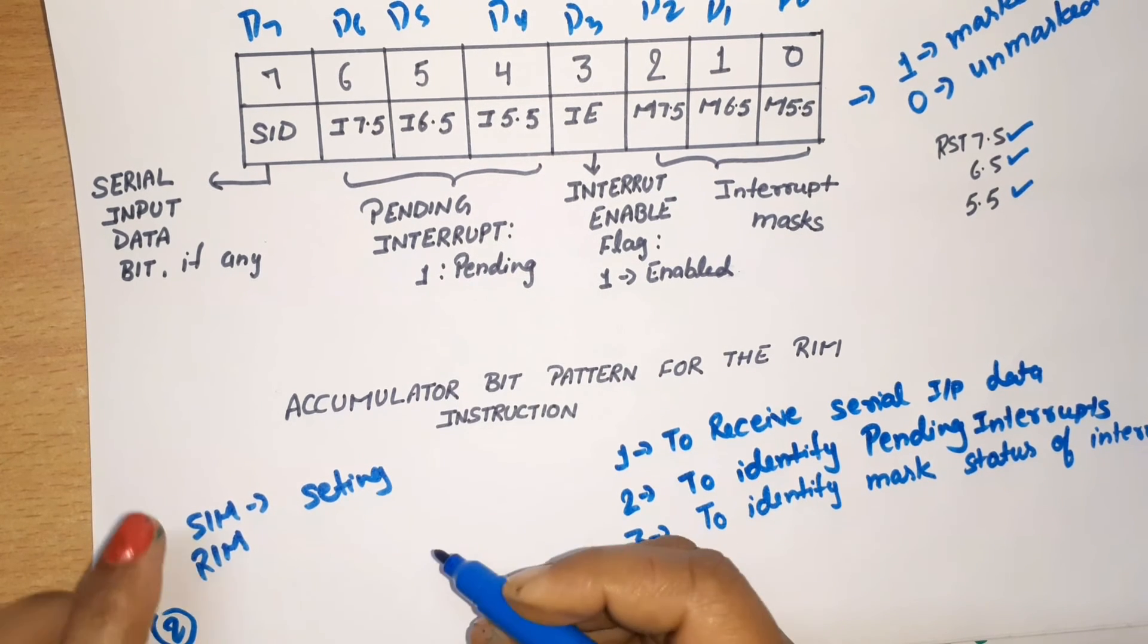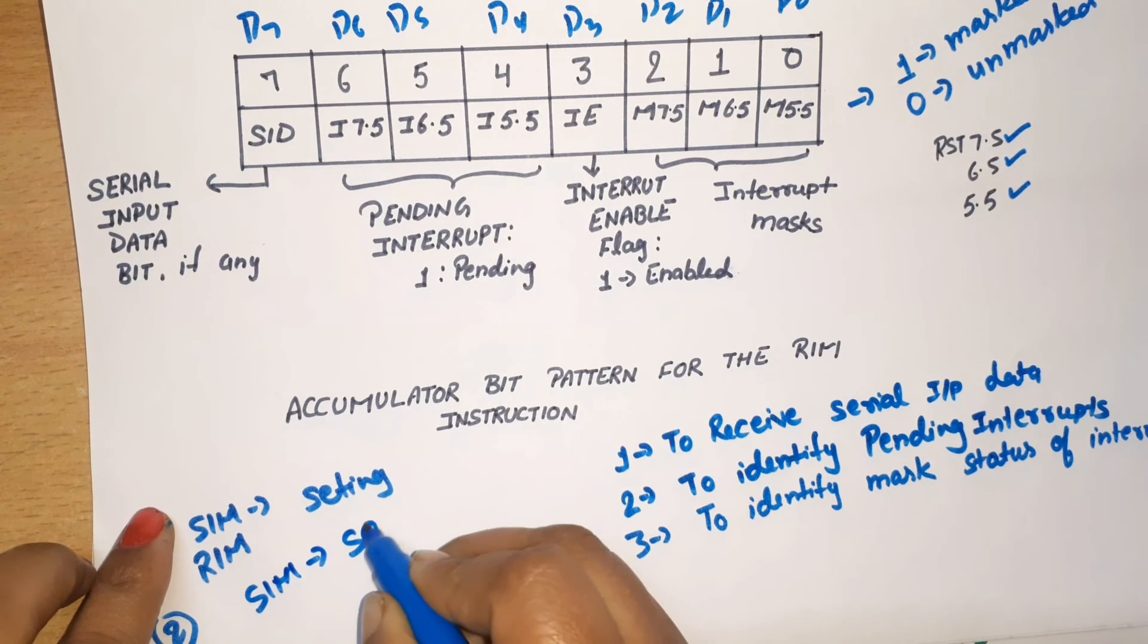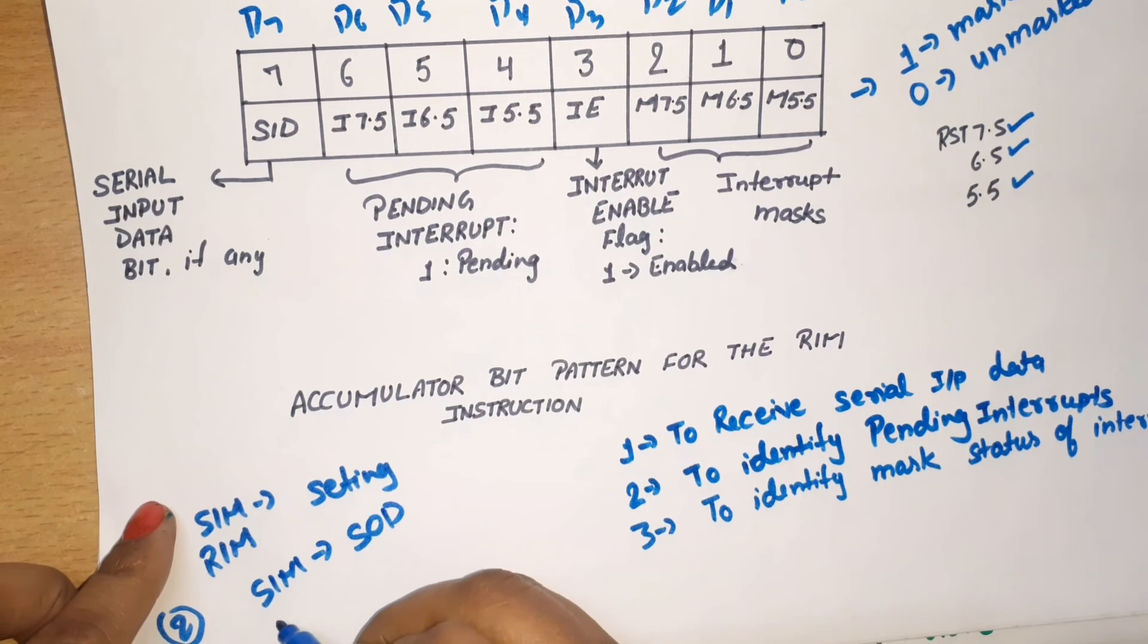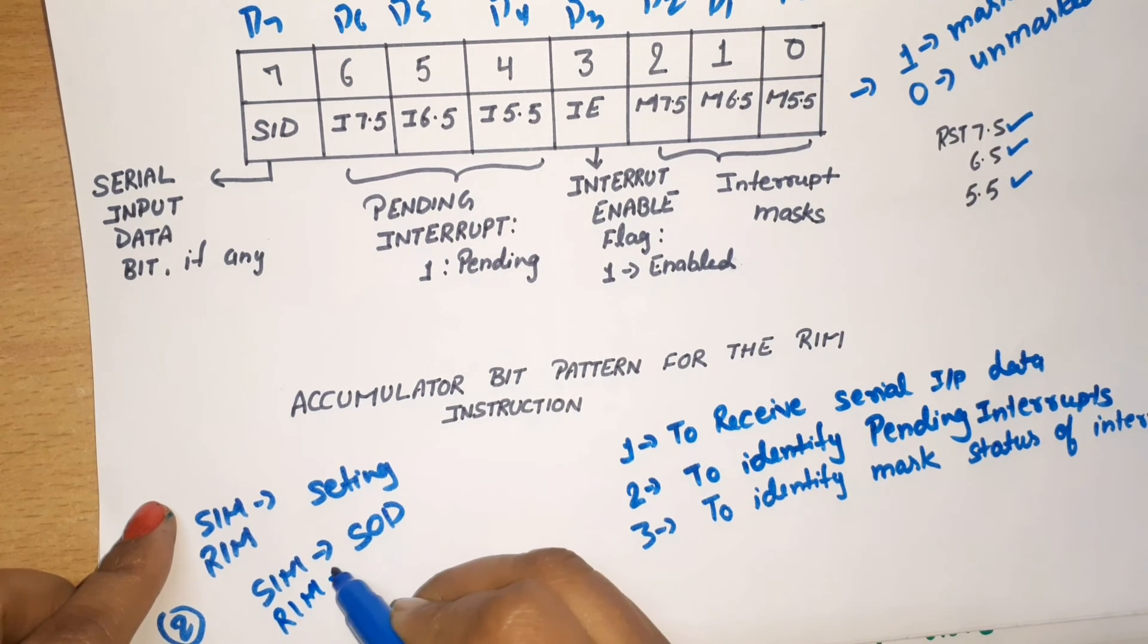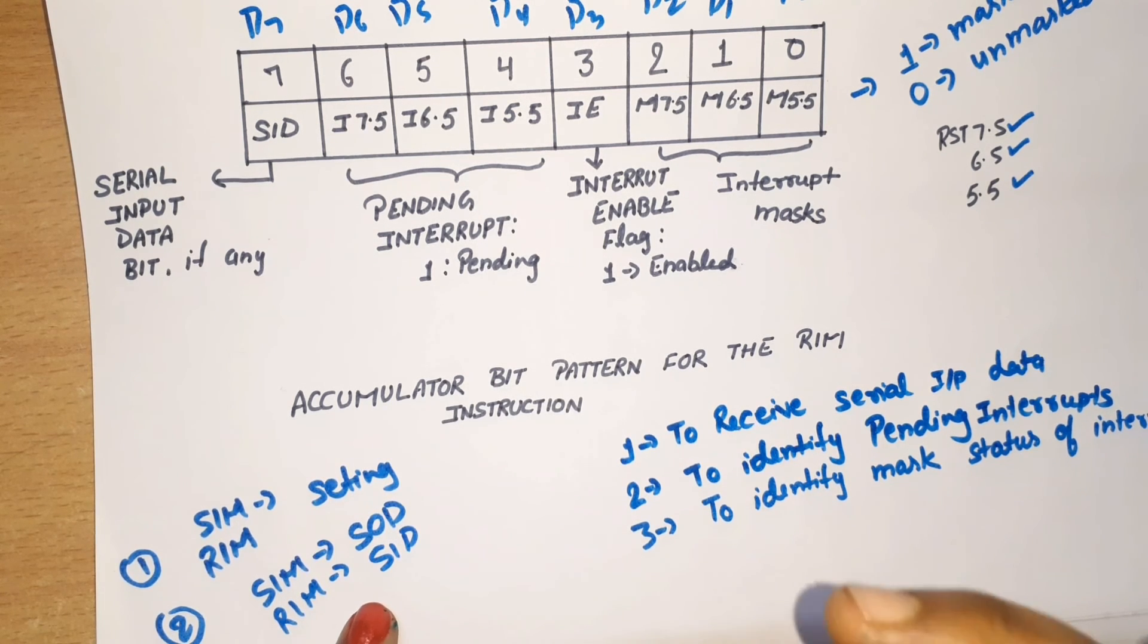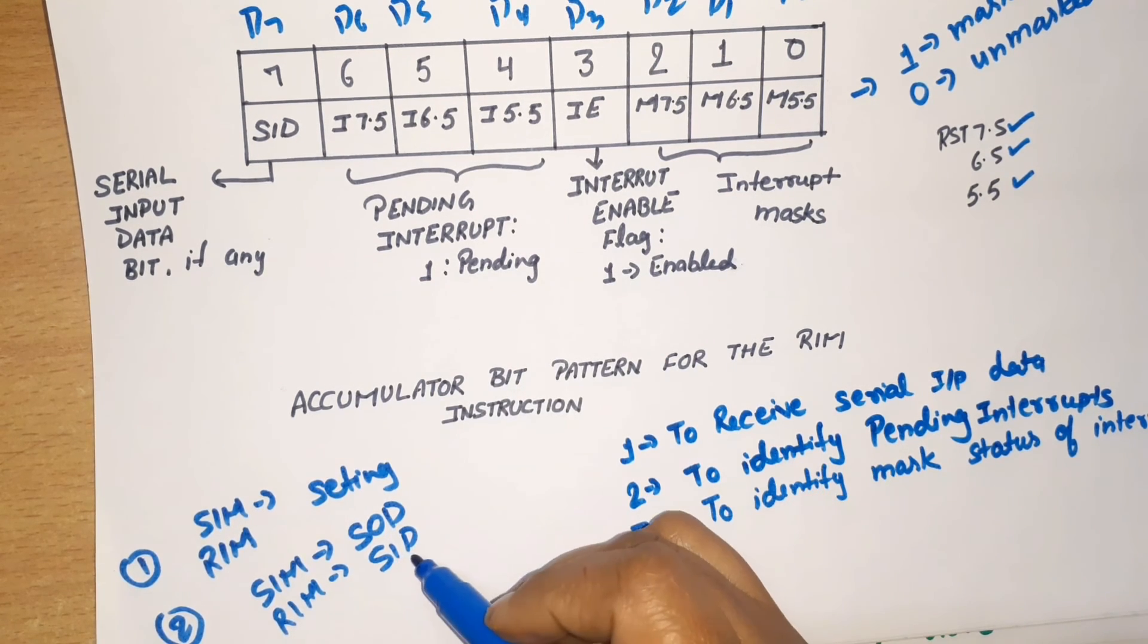The second difference: In case of SIM, we use it for serial output data, meaning we send data to the output. But in case of RIM, we have SID, meaning we receive the input data. If any data is available at the input device, we receive it through SID.